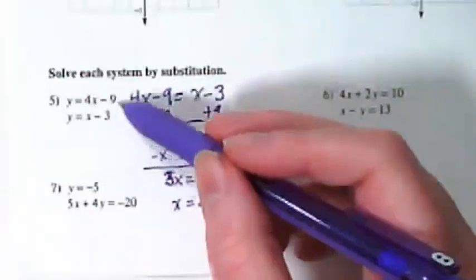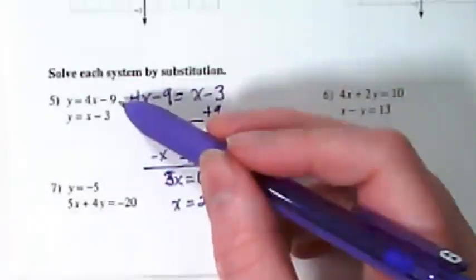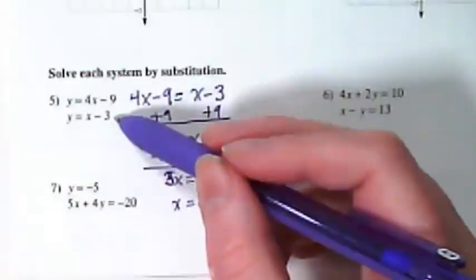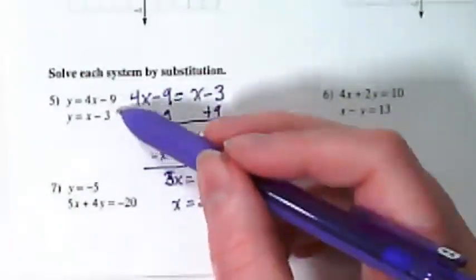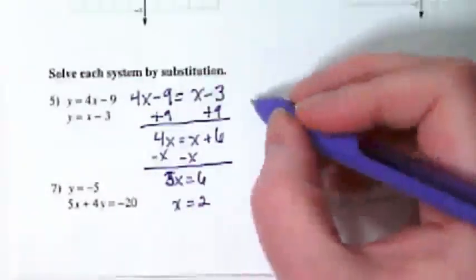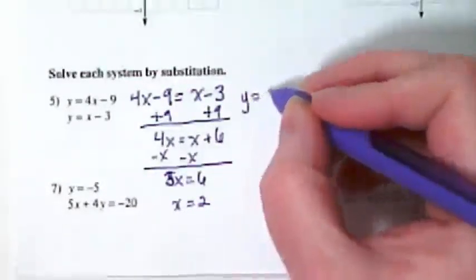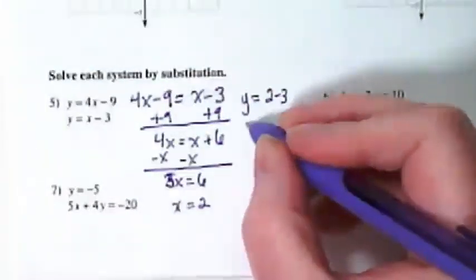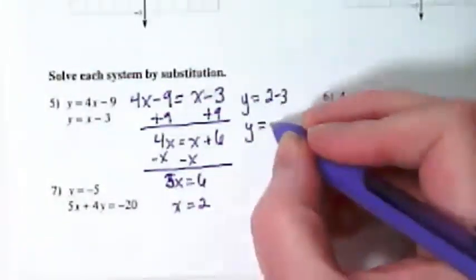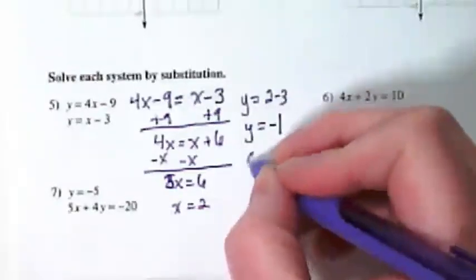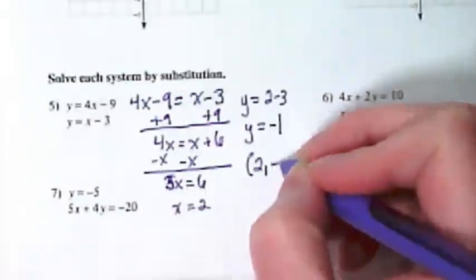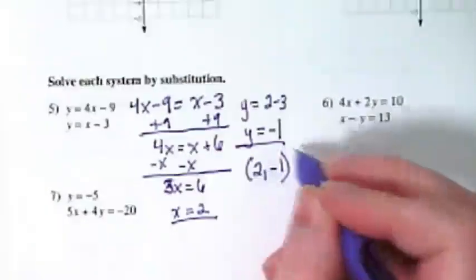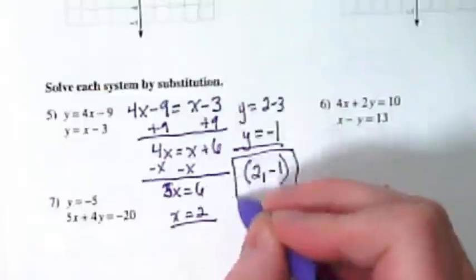I end up with x equals 2. I'm going to go back to the original equations and I'm going to pick whichever one is easiest to find y. I think the second equation is easiest because it doesn't have multiplication, right? So I'm going to rewrite this as y is equal to 2 minus 3. y is equal to negative 1. That means the answer to this is 2 comma negative 1. I'm putting my x in place and my y in place and this is my solution.